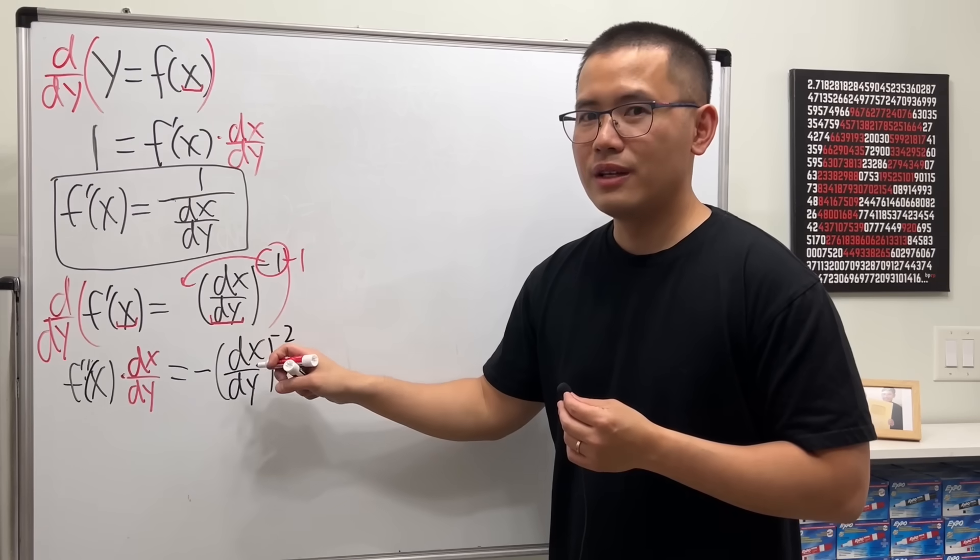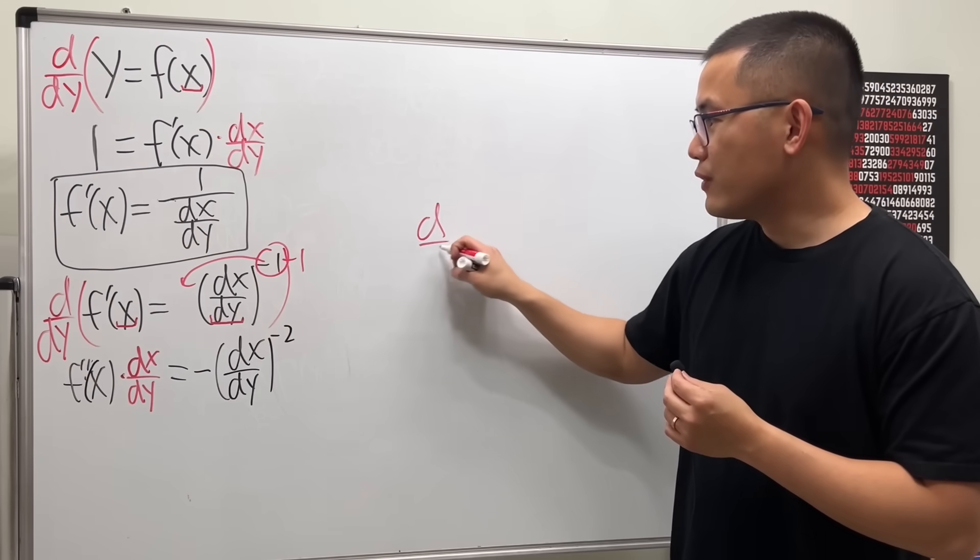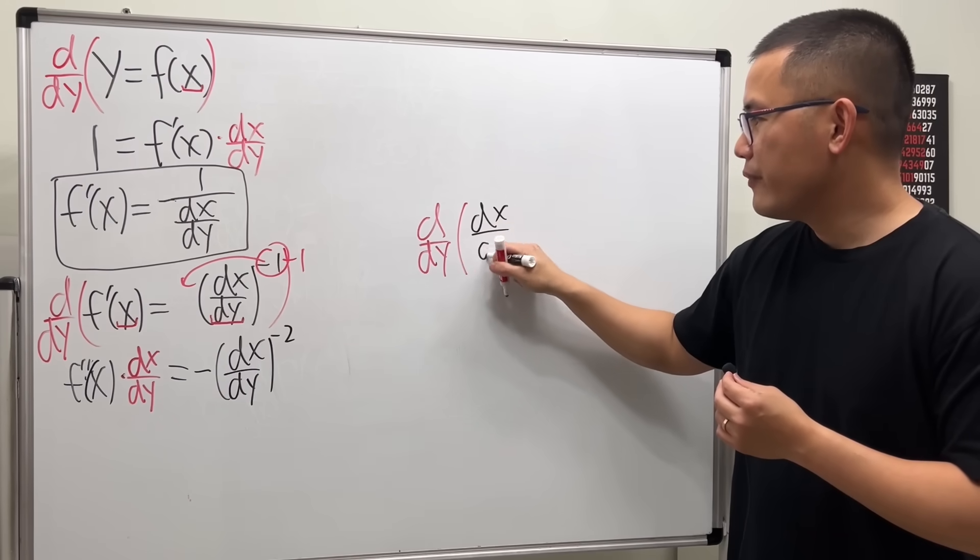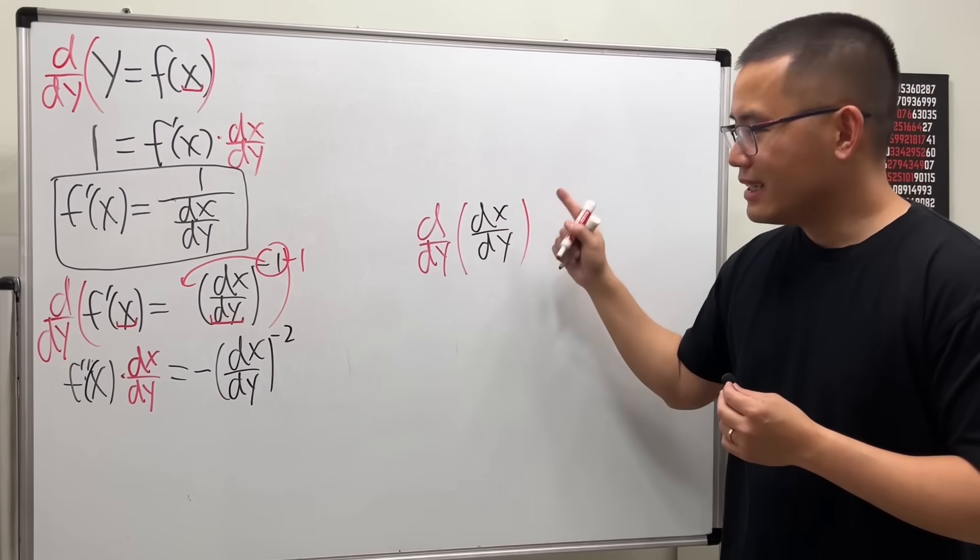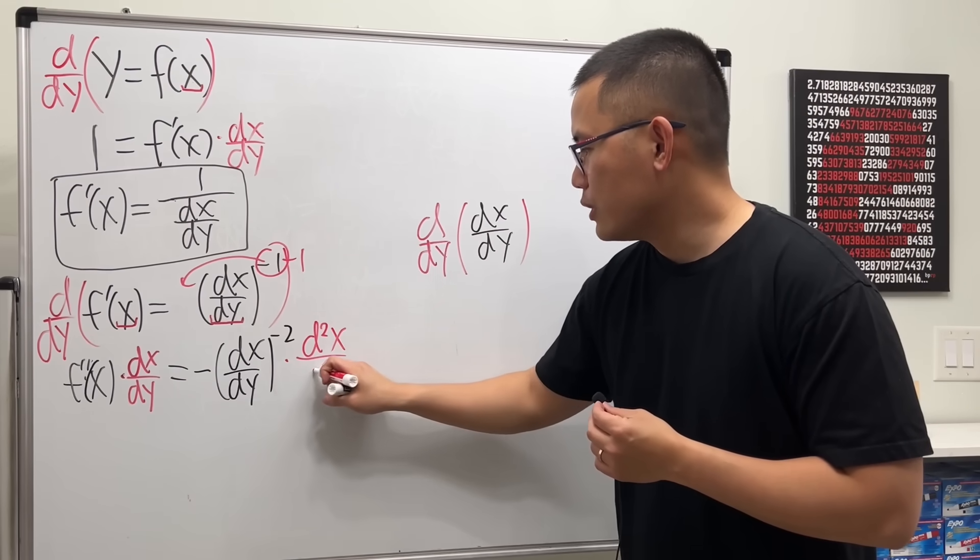But we have to multiply by the derivative of the inner function with respect to y, though. So we have to differentiate with respect to y of the inner function like this, and that is what this gives you: the second derivative of x with respect to y.